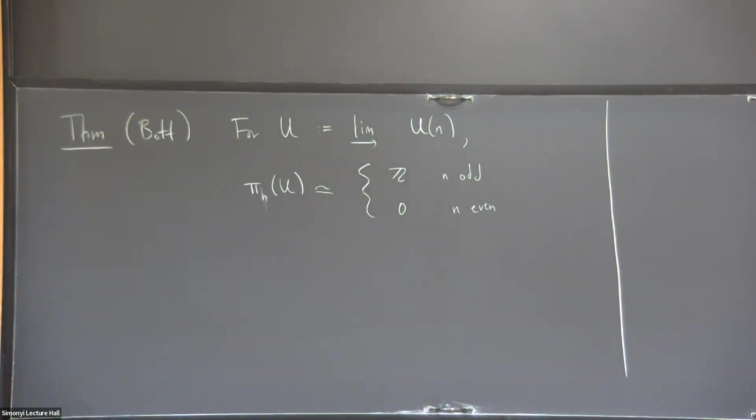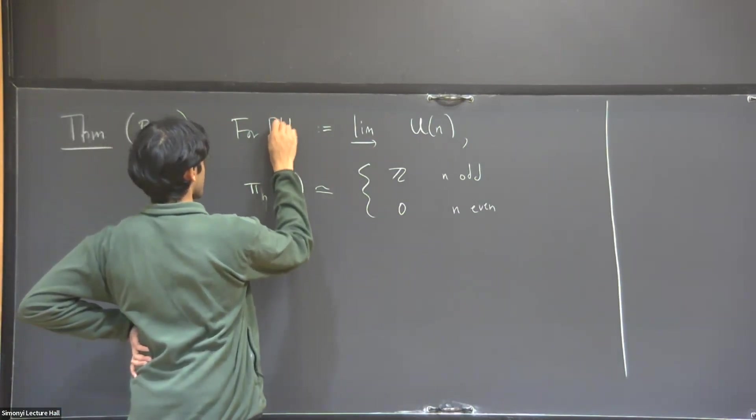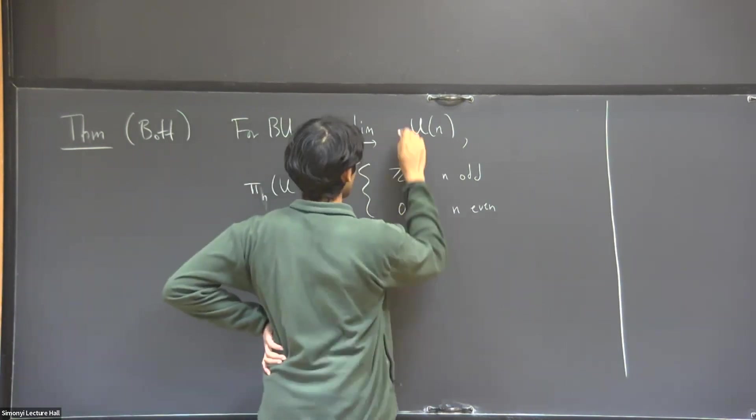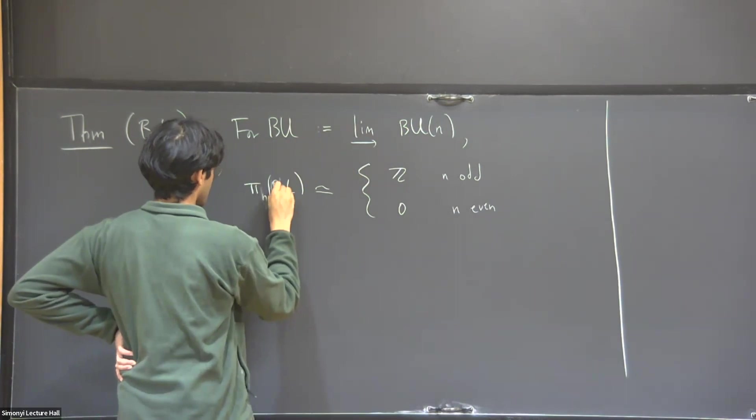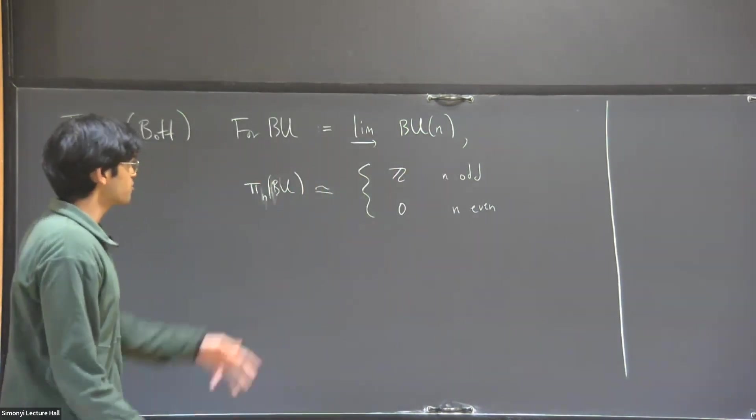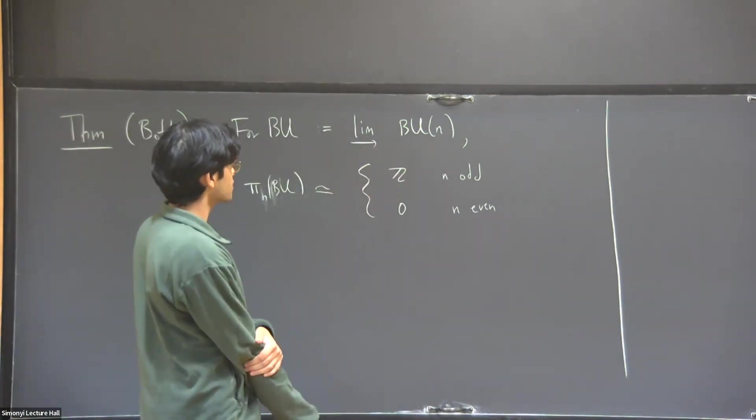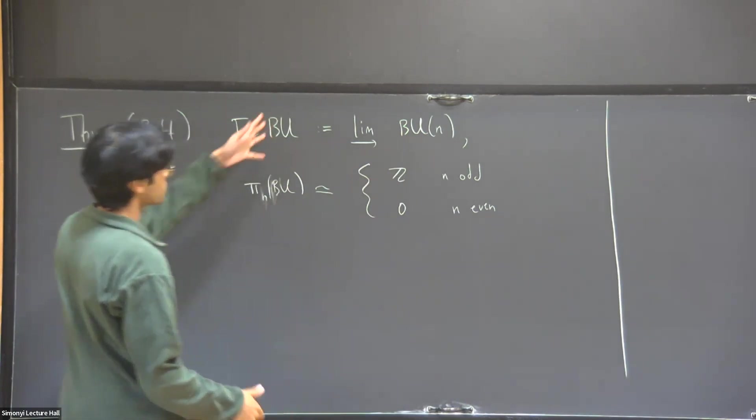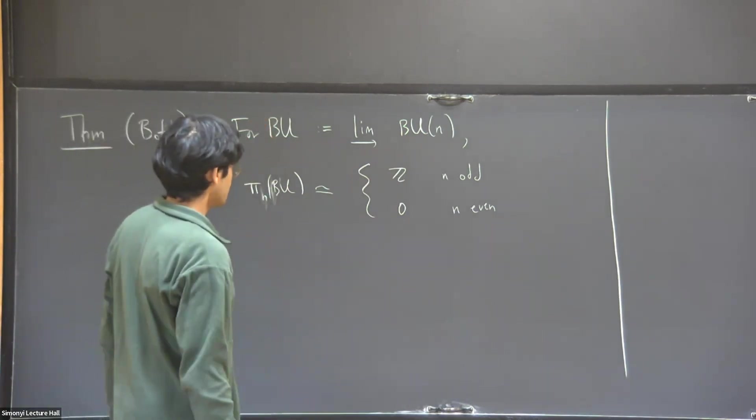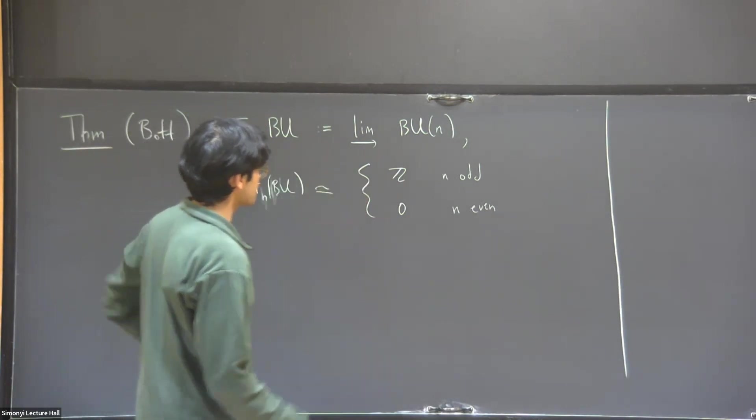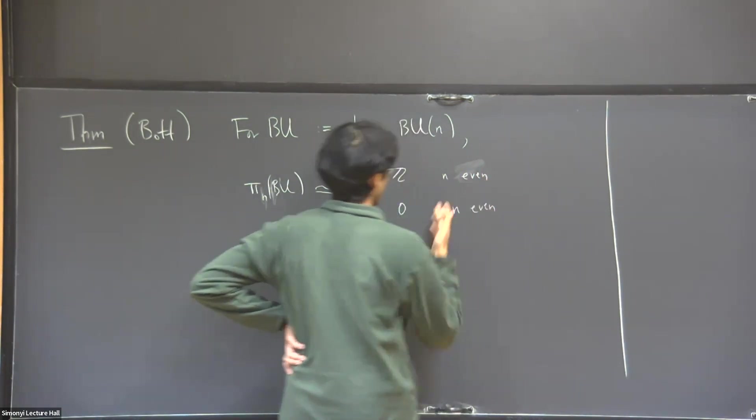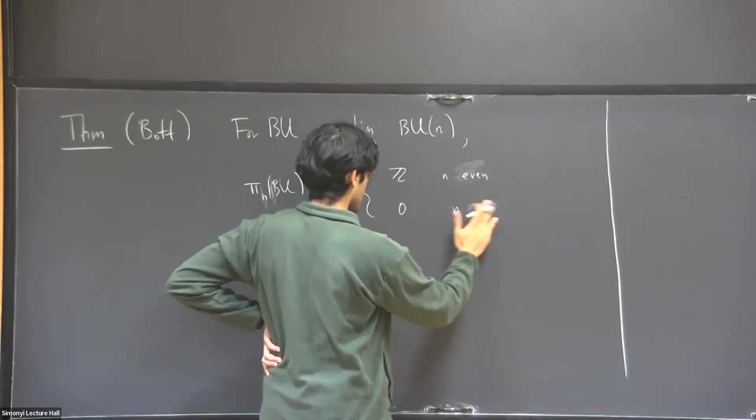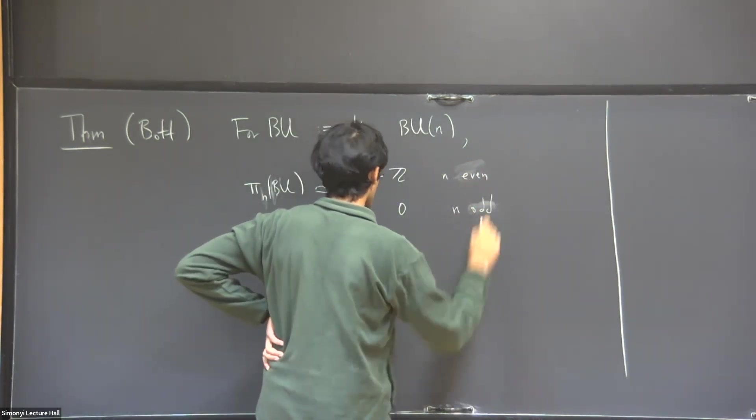My title has evenness and not oddness, so I'm going to massage this a little bit. I'm going to take classifying spaces by putting a B everywhere. So BU_n is a classifying space for n-dimensional complex vector bundles. I'll say a little bit more about BU in a second, but when you do this on the classifying spaces, things just get shifted by one.